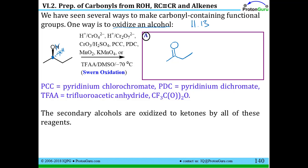There are a couple abbreviations here. PCC is pyridinium chlorochromate. PDC is pyridinium dichromate. TFAA, one of the reagents used in the Swern oxidation, is trifluoroacetic anhydride. These are condensed formulas listed out here, and secondary alcohols are oxidized to ketones by all of these reagents.